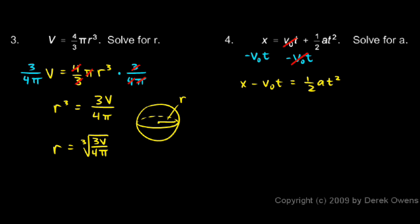And then, to solve for a, I need to multiply both sides by 2 over t squared. And that way, everything on the right will cancel out, except for the a. And I have to do the same thing on both sides. So over here, I multiply by 2 over t squared.